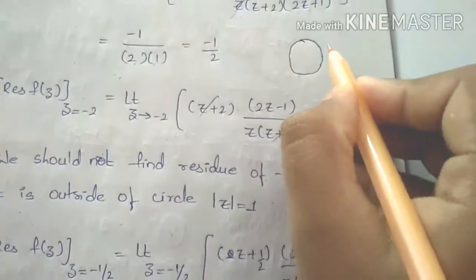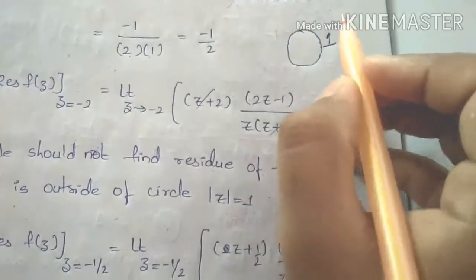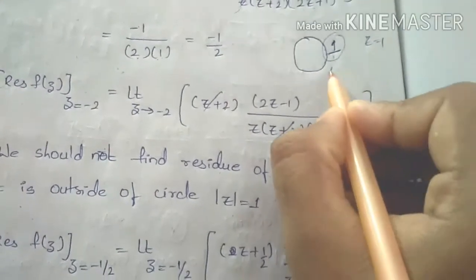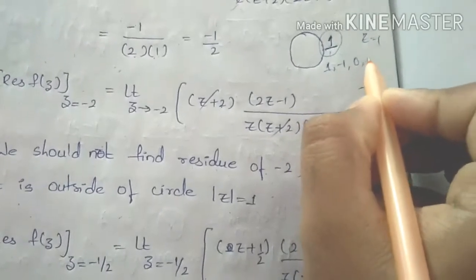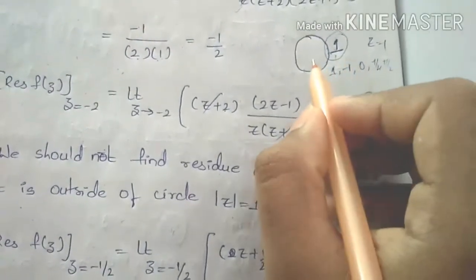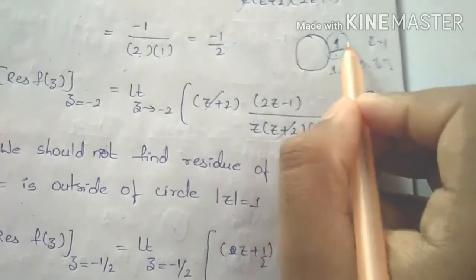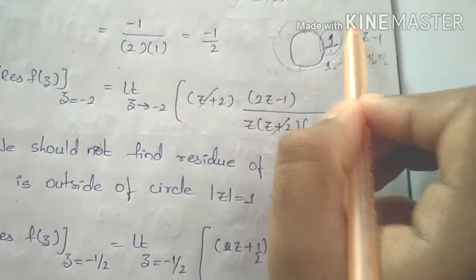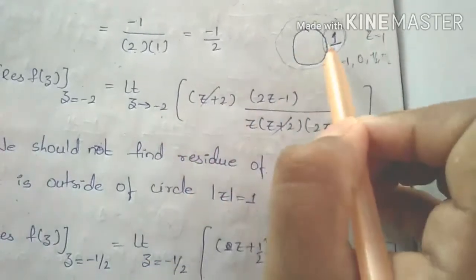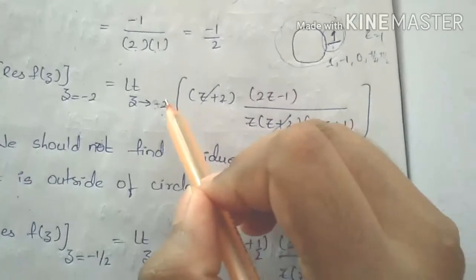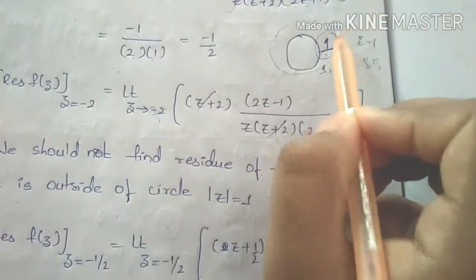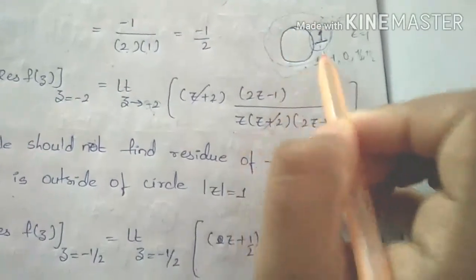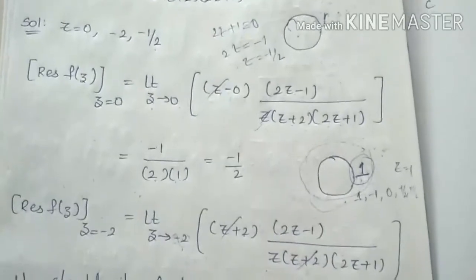For the circle |z| equals 1: the modulus of z equals 0 is 0, which is less than 1, so it is inside. The modulus of z equals minus 1 by 2 is 1/2, which is less than 1, so it is inside. The modulus of z equals minus 2 is 2, which is greater than 1, so it is outside the circle.